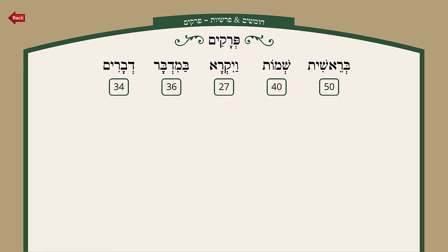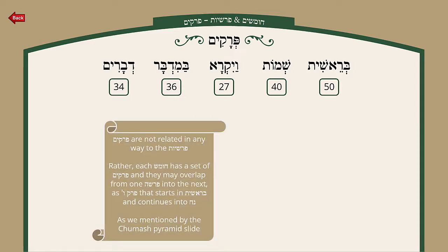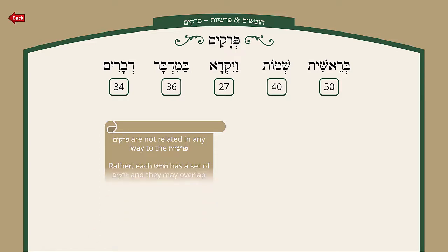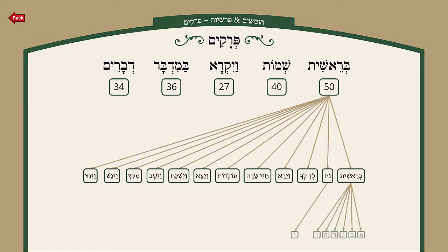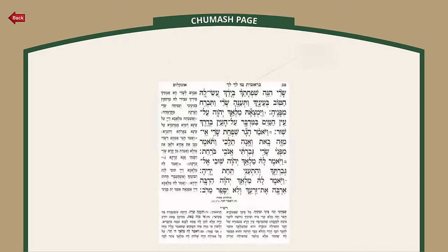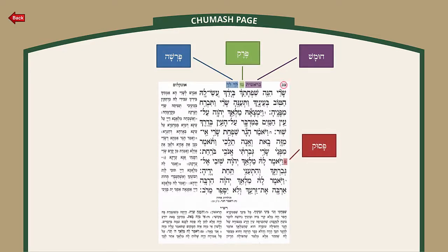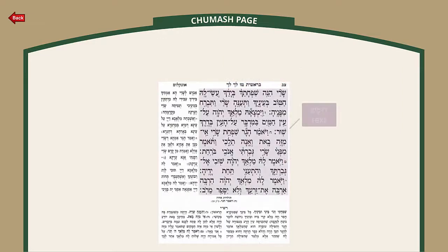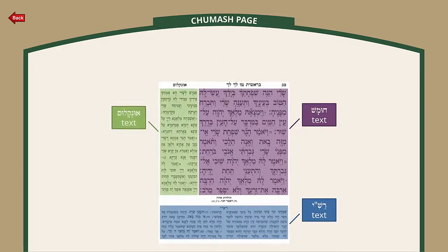When it comes to Perakim, it's not 10, 11, or 12 in each Sefer, but rather 50, 40, 27, 36, and 34 Perakim in each of the Sefarim. Perakim are not related in any way to Parshiyos — each Chumash has a set of Perakim and they may overlap from one Parsha to the next, as we said Perek Vav starts in Parashas Bereishis and continues into Parashas Noach. Looking at a page of a Chumash, we have which Chumash it is, which Parsha, which Perek, which Pasuk, the page number, and then the Chumash text, Rashi text, and Onkelos text.